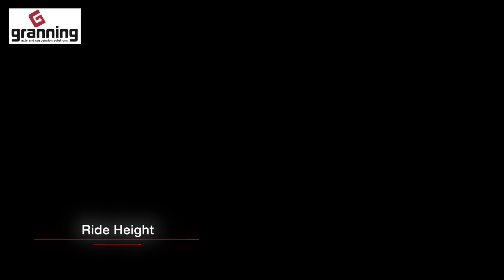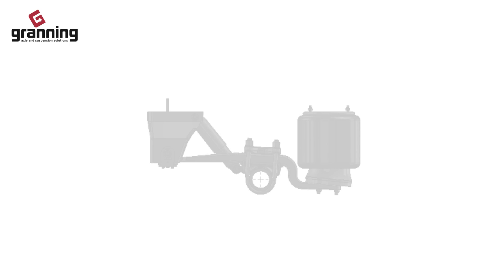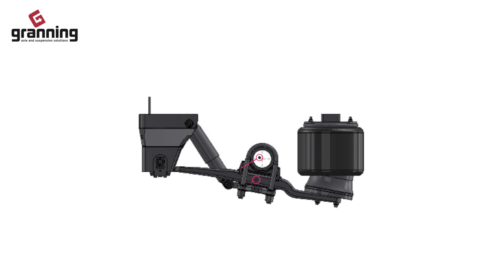Ride height is the distance from the centre of the axle to the top of the hanger, or where the hanger is welded to the chassis. By adding the static height of the tire you know how far your chassis will be from the ground. Over-slung and under-slung simply refers to the position of the spring — over the axle or under the axle.